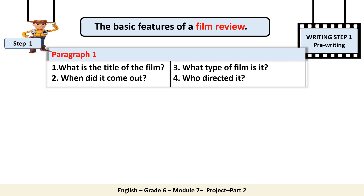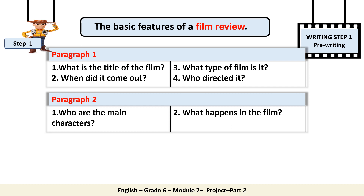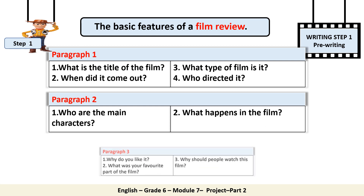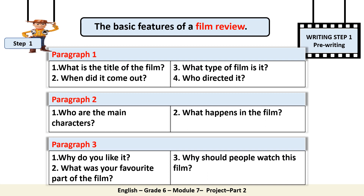In paragraph one, you have to answer: What is the title of the film? When did it come out? What type of film is it? Who directed it? In paragraph two: Who are the main characters? What happens in the film? In paragraph three: Why do you like it? What was your favorite part? Why should people watch it?